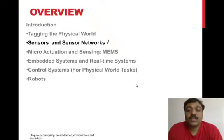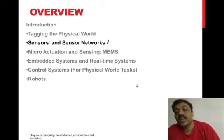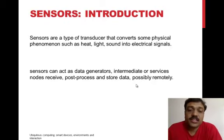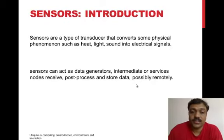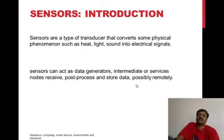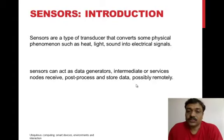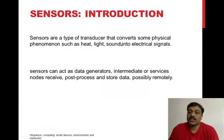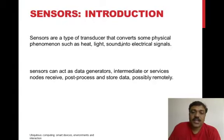Now let us talk about different types of sensors and sensor networks. A sensor is a type of transducer that converts a physical phenomenon such as heat, light, or sound into an electrical signal. Sensors placed in the physical world are analog devices, not digital, which is why we need to convert their output into electrical signals.